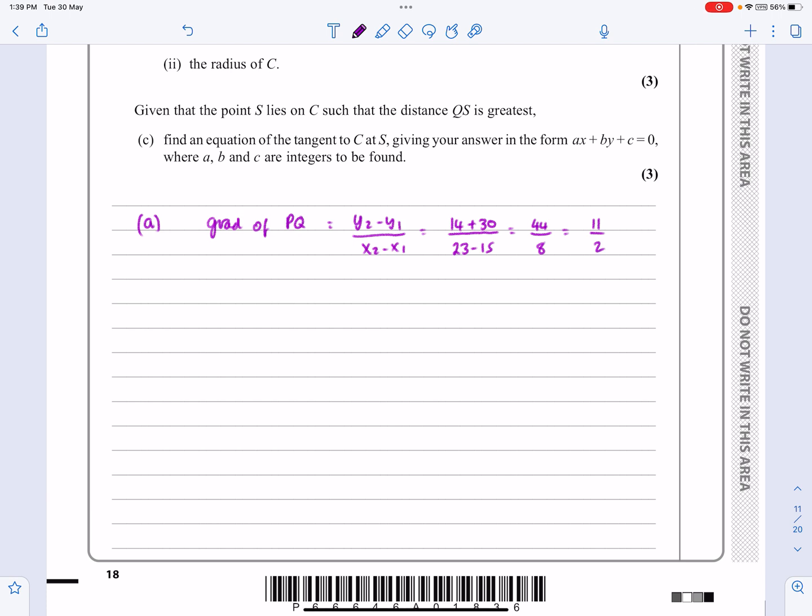So I already know the other gradient is going to work out to be minus 2 over 11. But let's go ahead and do it. If I'm going to do the gradient of RQ, it's using exactly the same formula, Y2 minus Y1 over X2 minus X1. So this time, I've got minus 30 minus minus 26, that's plus 26 over 15 plus 7, which works out to be minus 4 over 22, which works out to be minus 2 over 11.